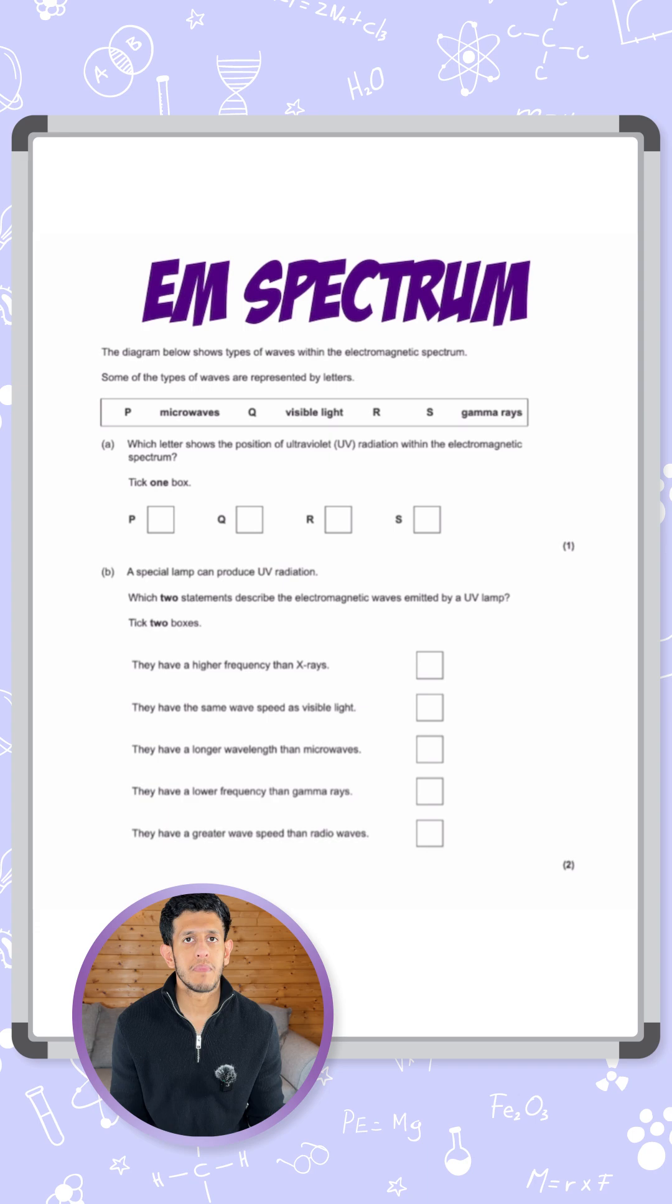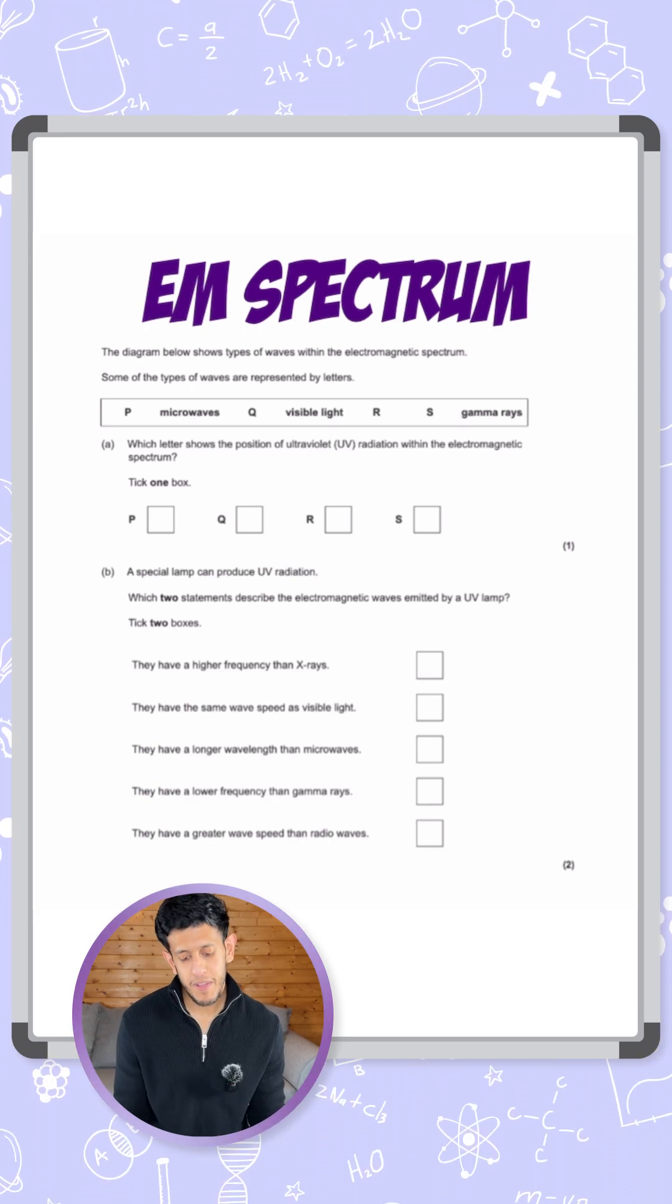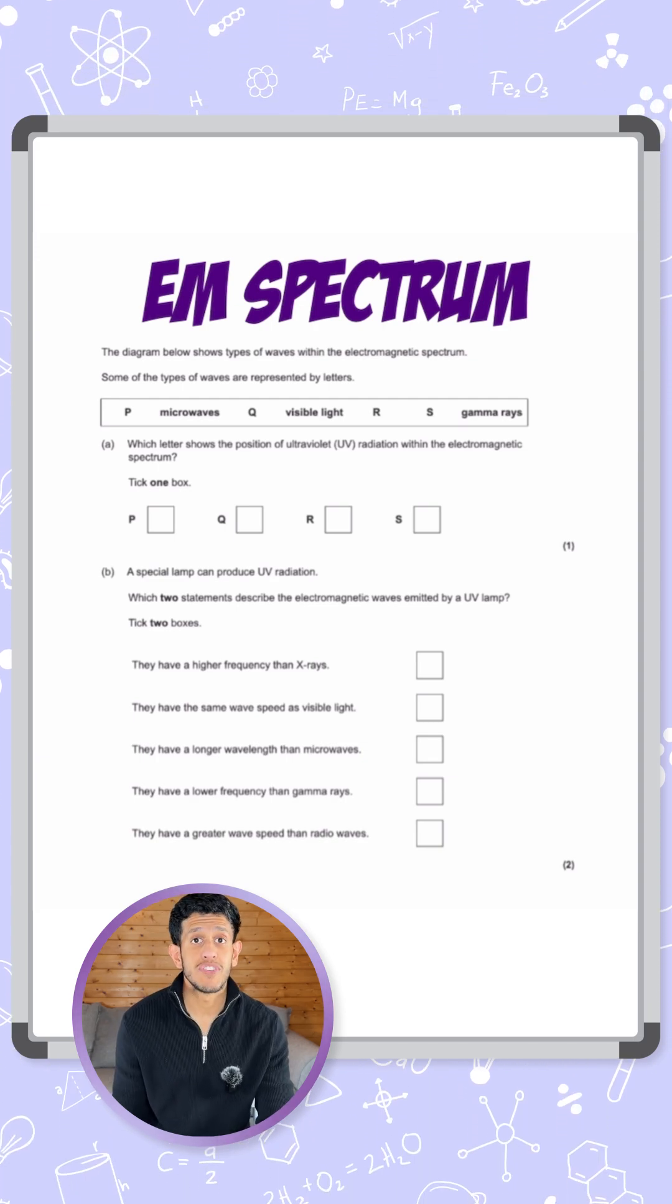To do this we need to remember what the order of the electromagnetic spectrum is. We have a memory trick for it. The one I'm going to say here is: red martians invade Venus using x-ray guns.